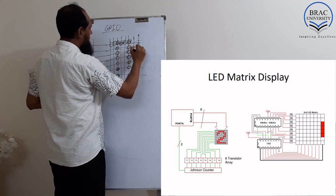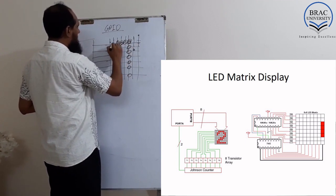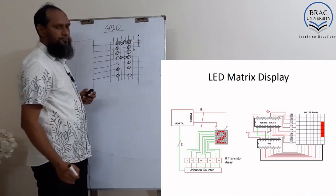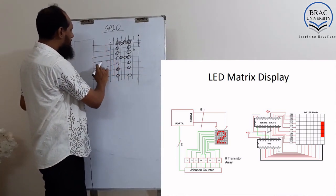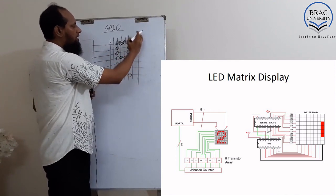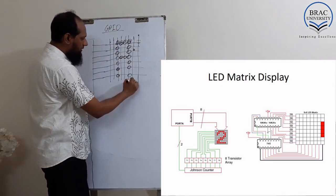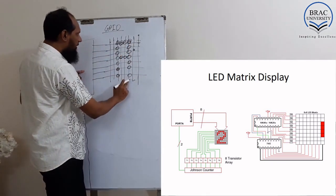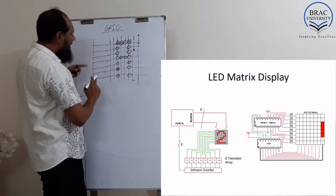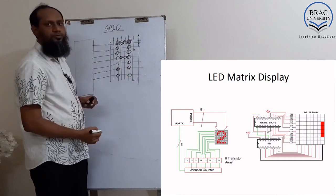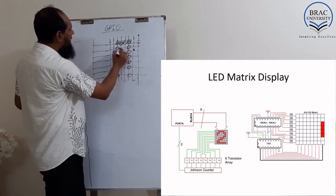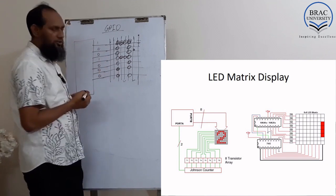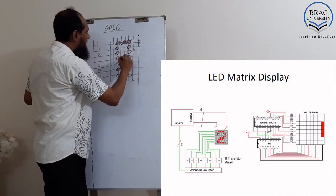I do not need to glow some of these, but I do want to glow these others. When this row is selected, it sends 0 to all the output ports so no LEDs on that line glow. When I select another row, it gives 1 to all pins so all LEDs glow. For the next row, it sends 1 only on specific pins — all others get 0 — so only those particular LEDs glow.